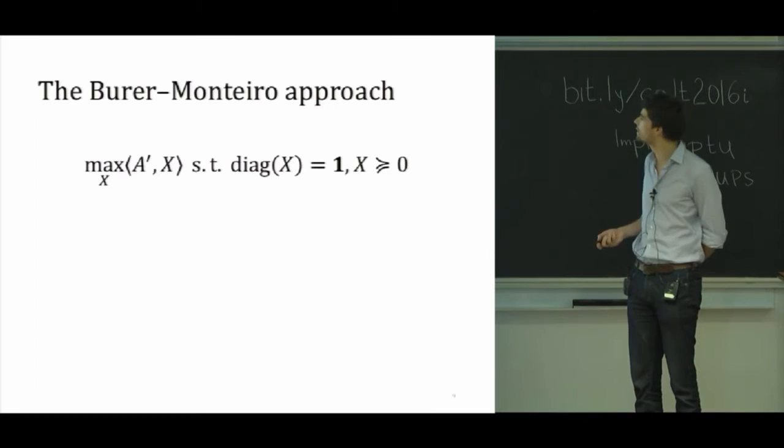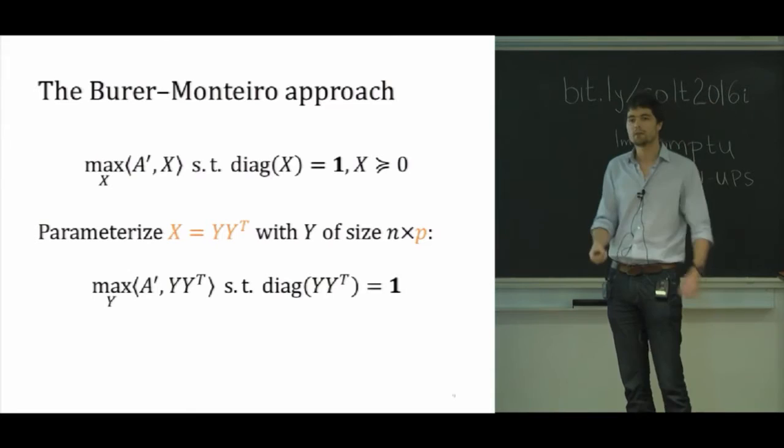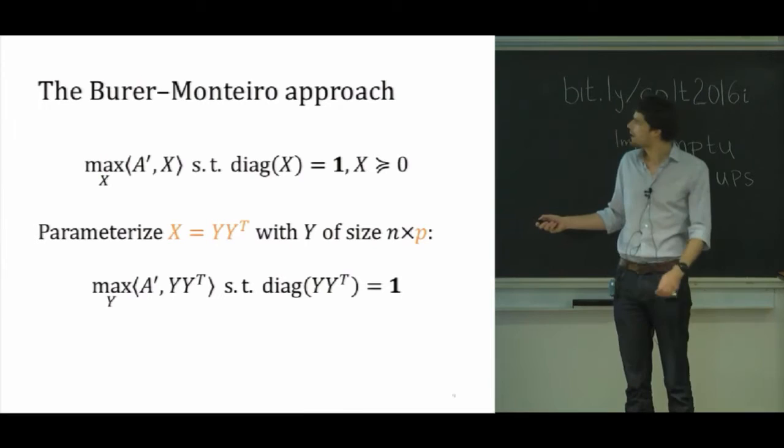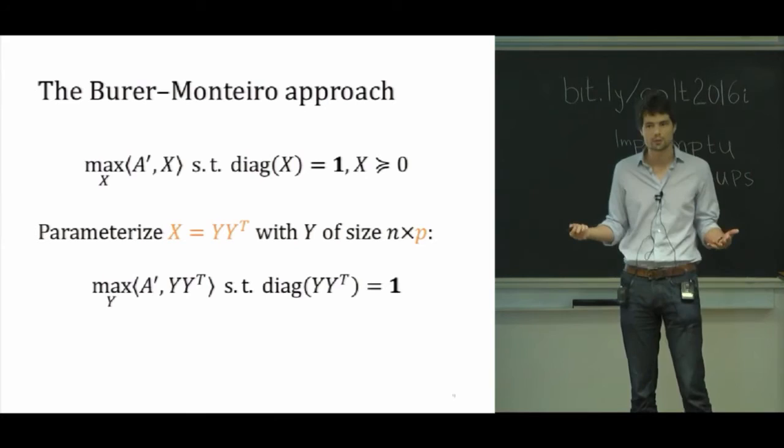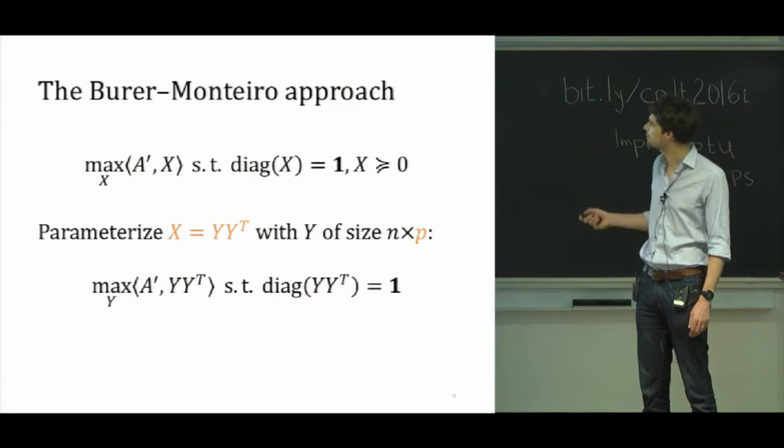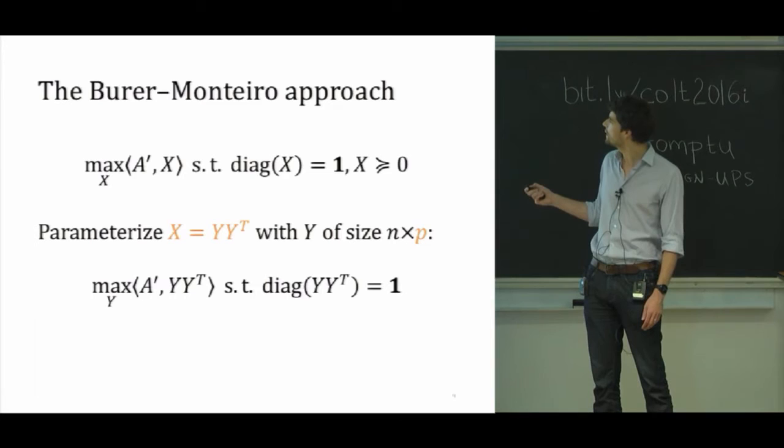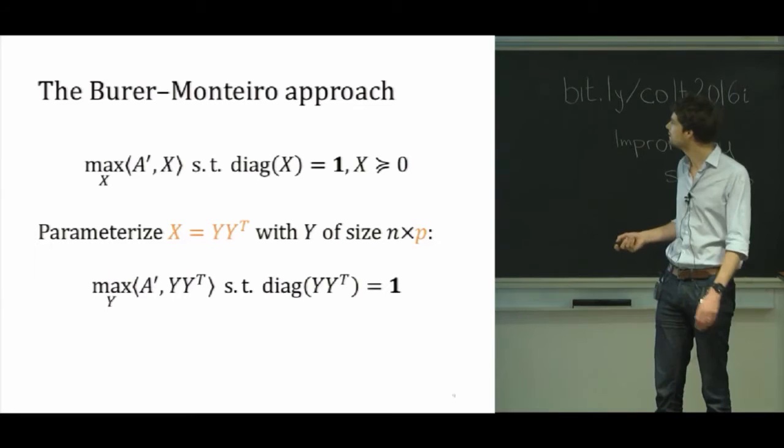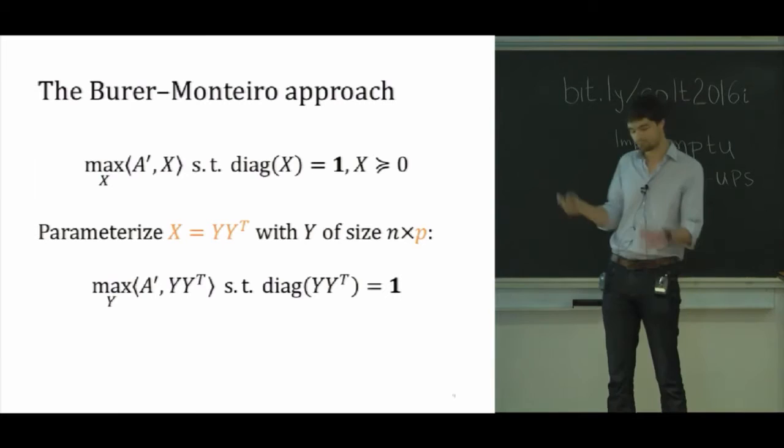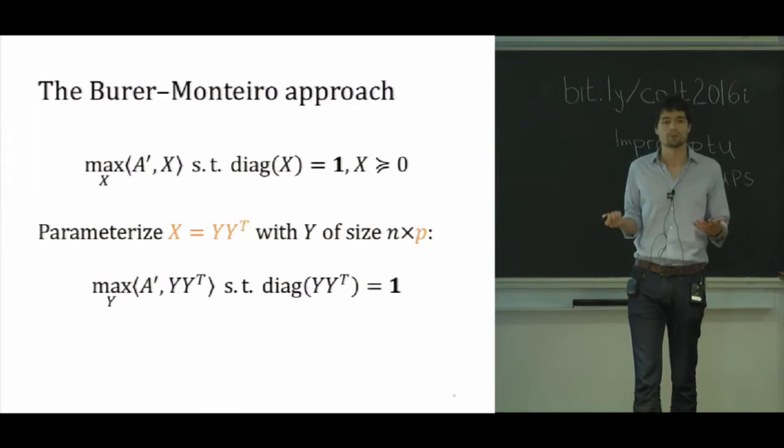So a simple-minded approach to evade this issue is to introduce a new variable Y. And I think of Y as being a tall and skinny matrix of size N by P, and I control P. And I'm just going to factor X as YY transpose. Now I parameterize X as being the product YY transpose, and Y is the tall-and-skinny matrix. And I just plug this into the problem above and see what happens. Of course X here becomes YY transpose, likewise here. But now this constraint, I don't need to do anything. It's mechanically enforced. So I don't have to work at all for it. And with respect to the dimensionality of my problem, just by tuning P here, which admittedly changes the problem that I'm looking at, just by tuning P, I get to control the dimensionality of the problem that I look at.